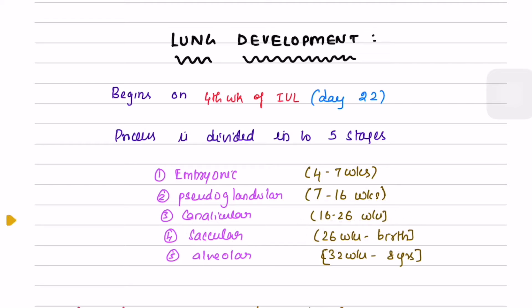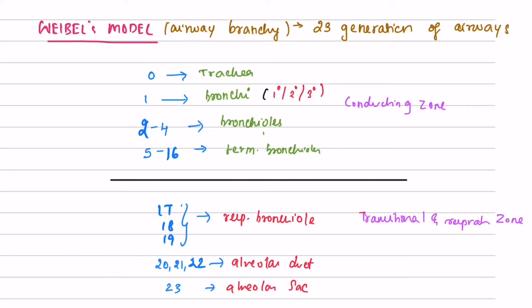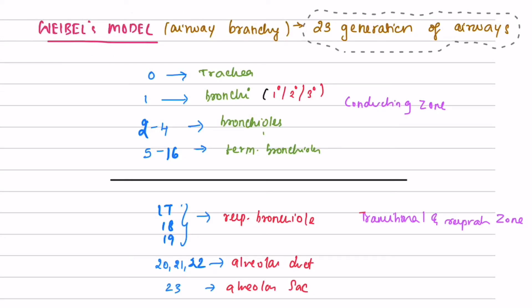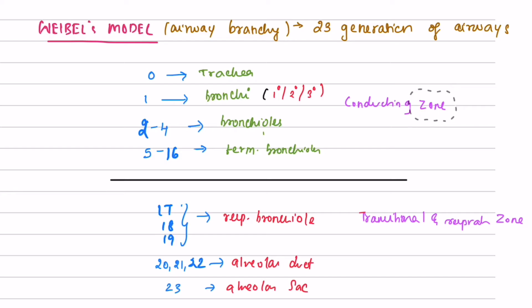The alveolar stage runs from 32 weeks to eight years. In Weibel's model of airway branching, there are 23 generations of airways: generation zero is the trachea, generation one includes primary, secondary, and tertiary bronchi, generations two to four are bronchioles, and generations five to sixteen are terminal bronchioles. Up to terminal bronchioles they are known as conducting zones because no gas exchange occurs in these zones.